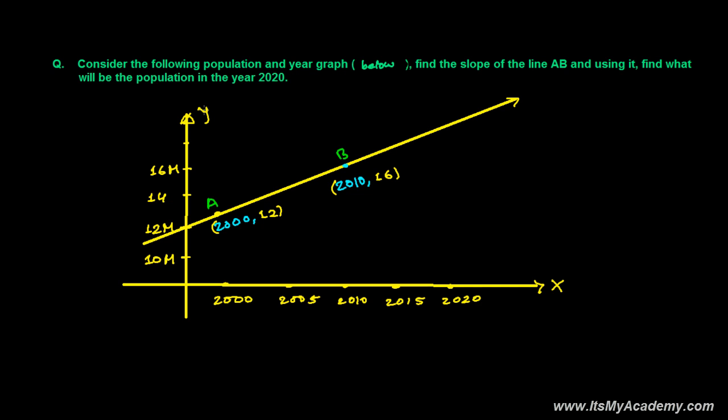Based on the slope of a line, we have a very interesting question here related to the population of a city. Consider the following population and year graph given below. Find the slope of the line AB and using it, find what will be the population in the year 2020.